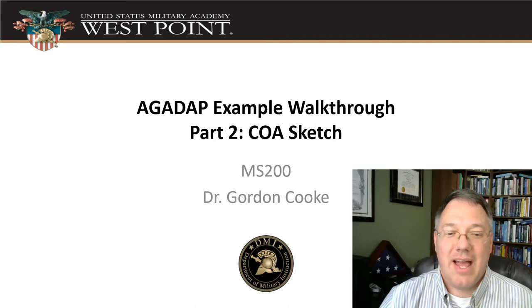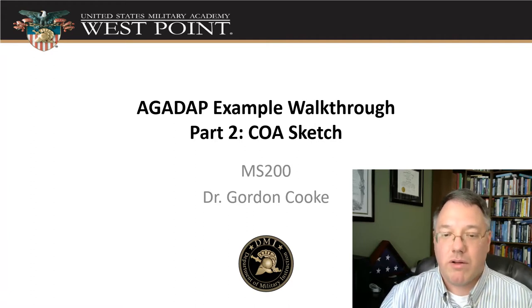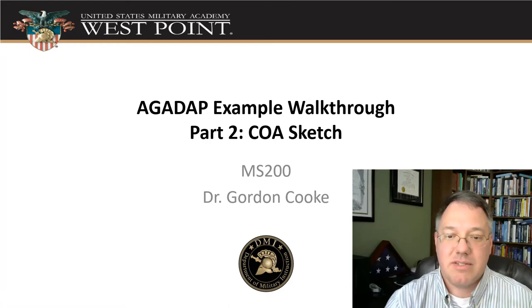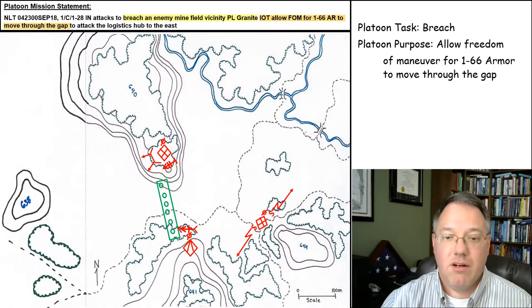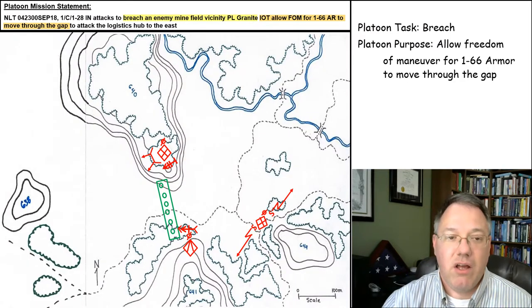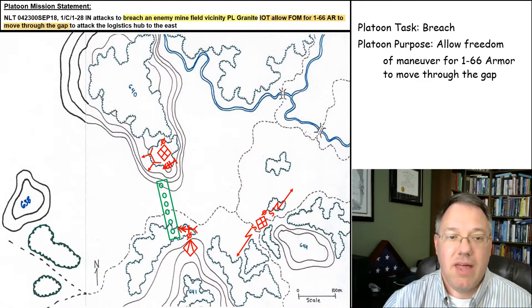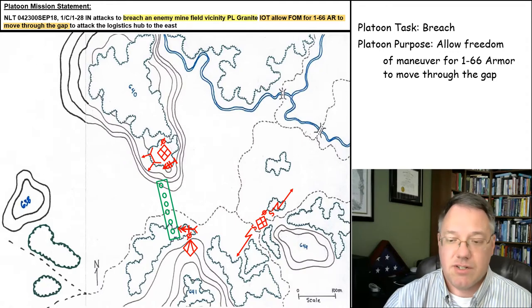Okay, Dr. Cook back, and we're going to be looking at part two of our AGADAB walkthrough of how we do our concept sketch. All right, as a reminder, here's the little map of our scenario and our platoon mission statement that first platoon attacks to breach an enemy minefield vicinity of phase line granite in order to allow freedom maneuver for 166 armor to move through the gap and then attack a logistics hub to the east.